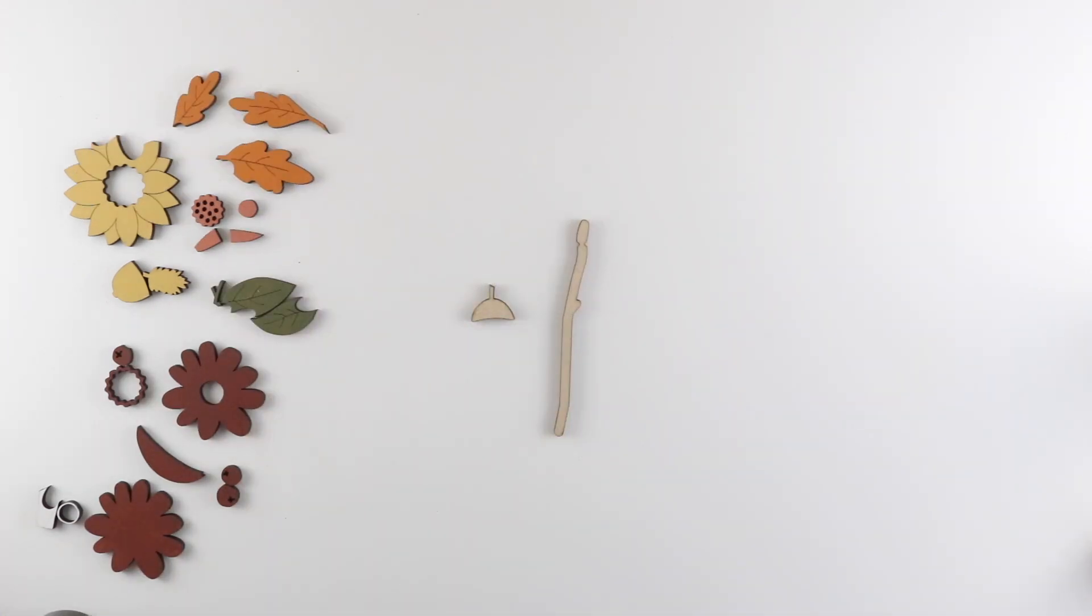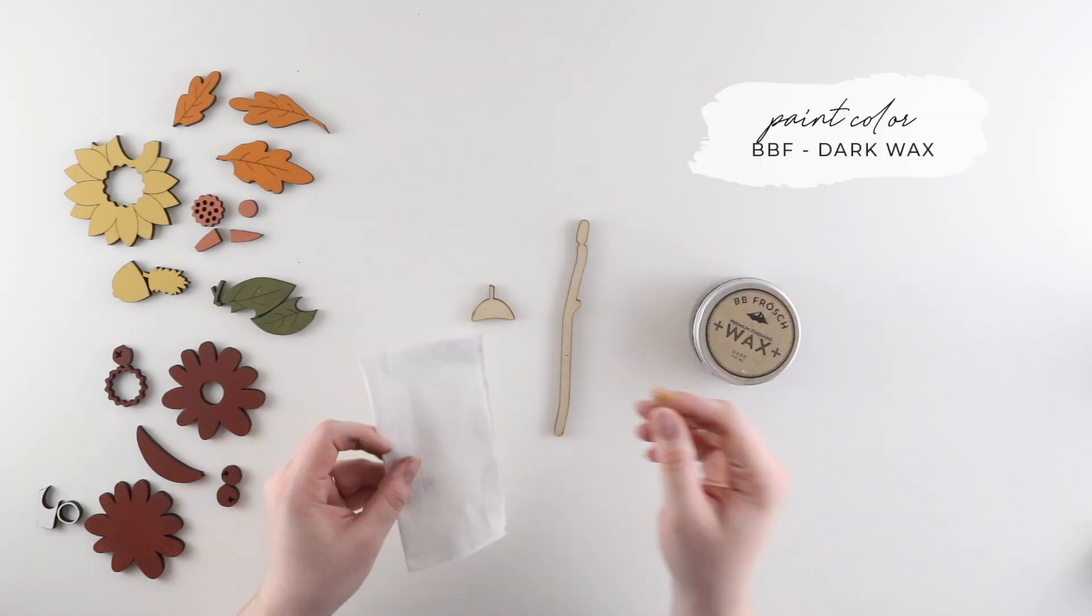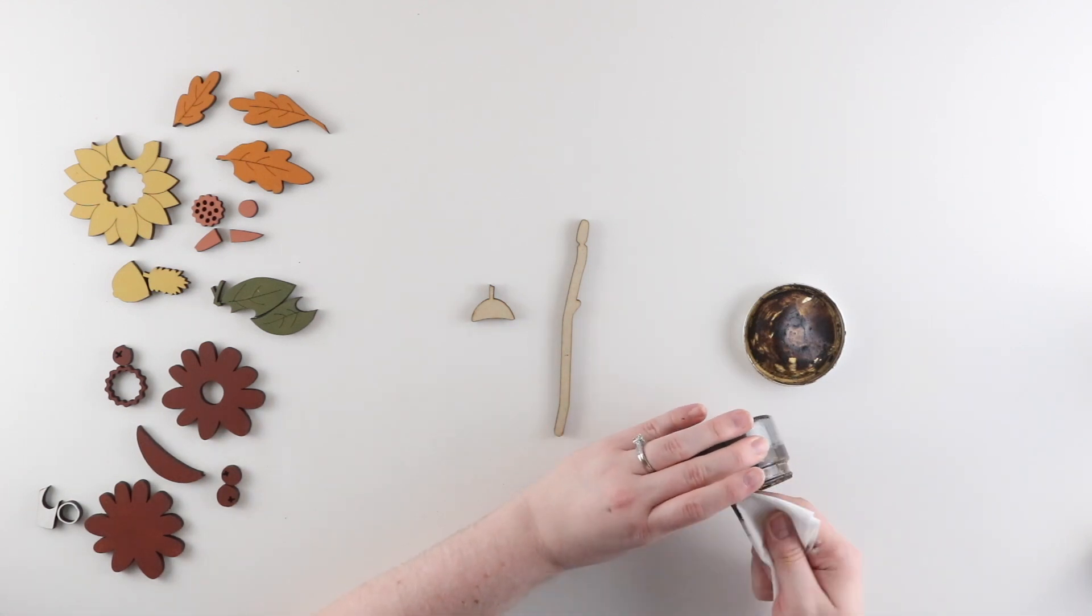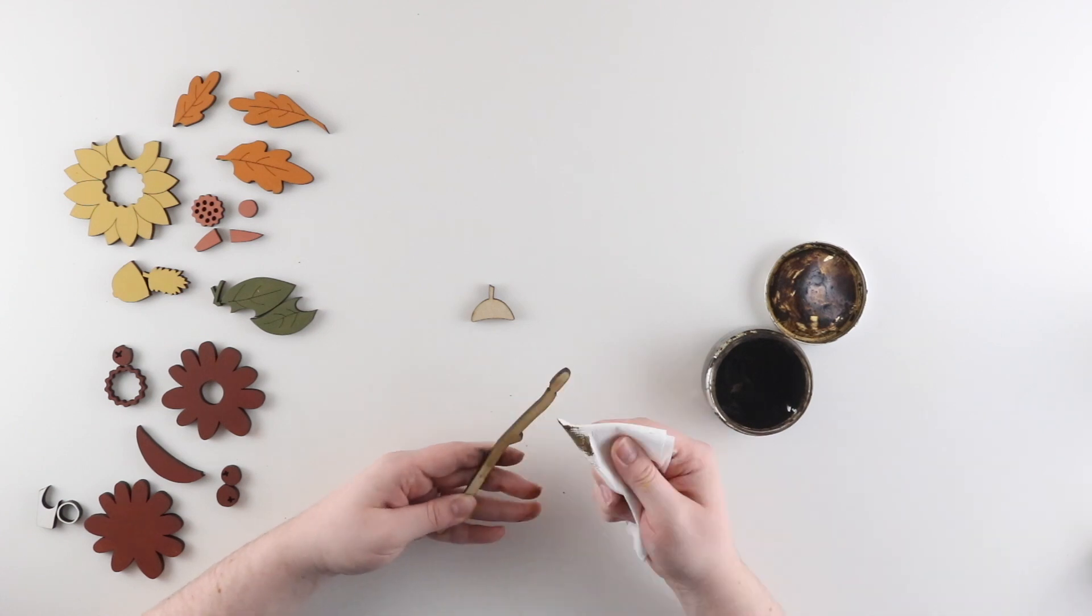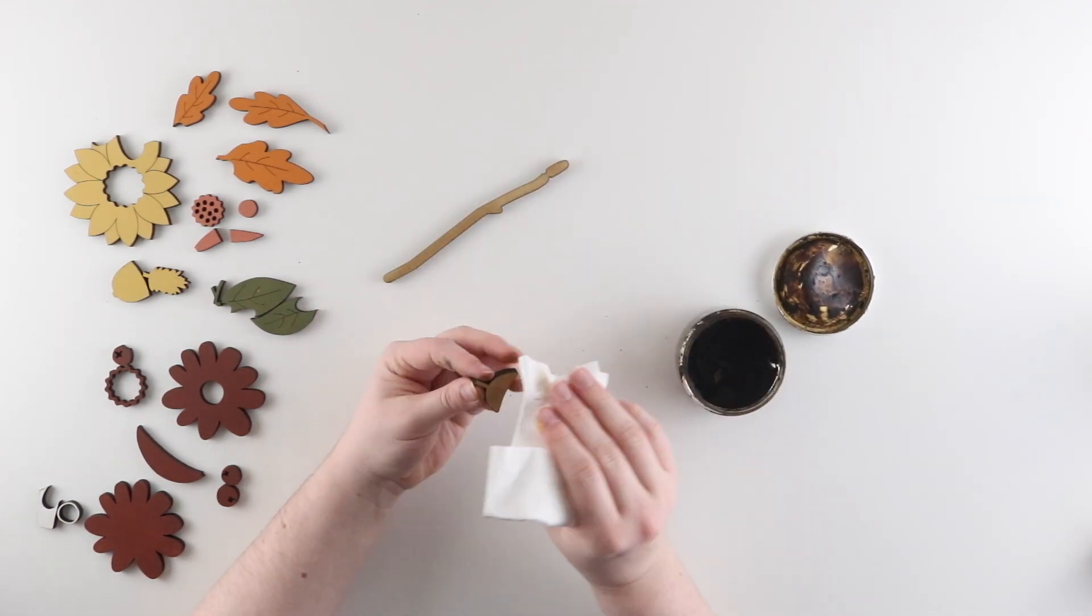For the top of the acorn and the broom handle I'm going to be using BB Frosch Dark Wax and a wax cloth. Using a corner of the wax cloth I'm going to apply some of the wax to my piece and rub it in. Once I have the piece covered in wax I'm going to use a clean spot of the rag to remove any excess.